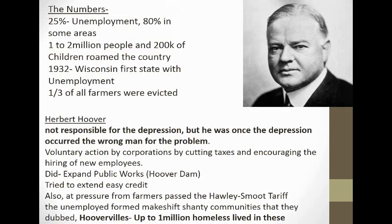Herbert Hoover was the president when the Depression hit in 1929. Hoover was a businessman who, similar to the previous two presidents, believed very much in less-regulated laissez-faire capitalism. When the Depression hit, it wasn't his fault, but once it occurred he was really the wrong man for the problem. He did do some things that helped a little — he greatly expanded federal public works funding, hence the building of the Hoover Dam, which creates Lake Mead outside of Las Vegas. But he didn't believe in going much further than that. During the Great Depression, one to two million people and 200,000 children were homeless, roaming the cities and the country, going from city to city.